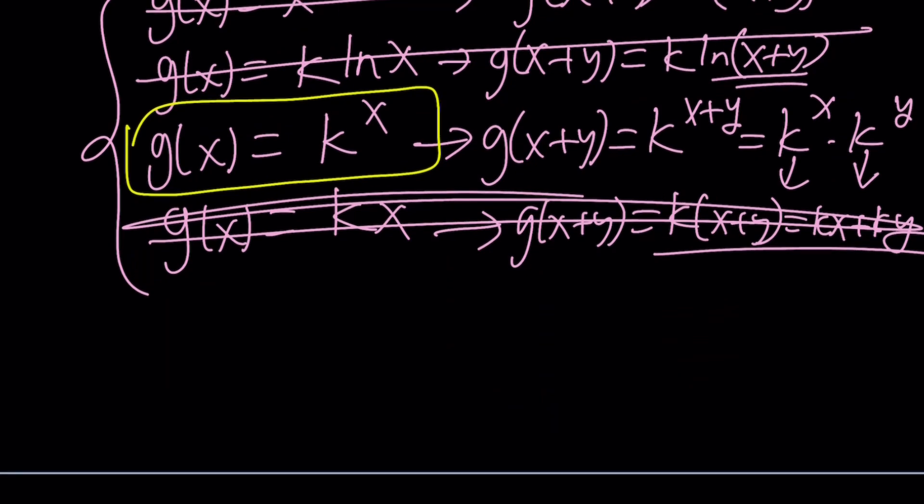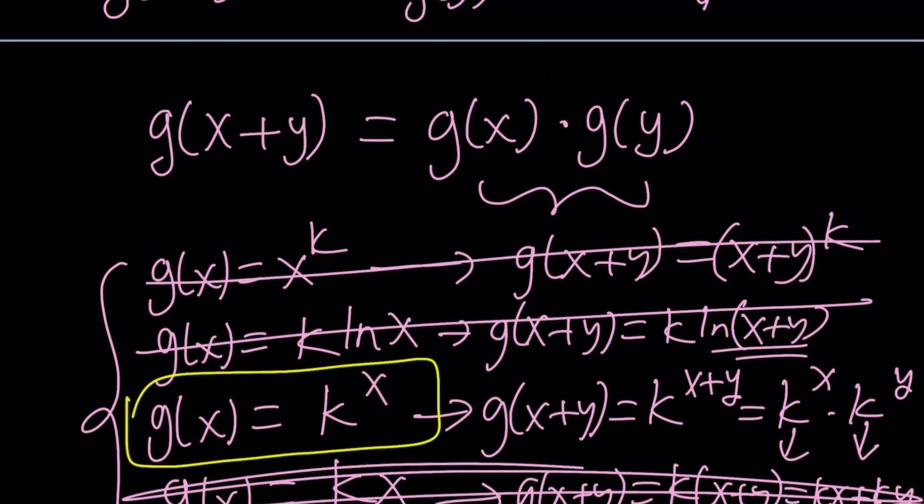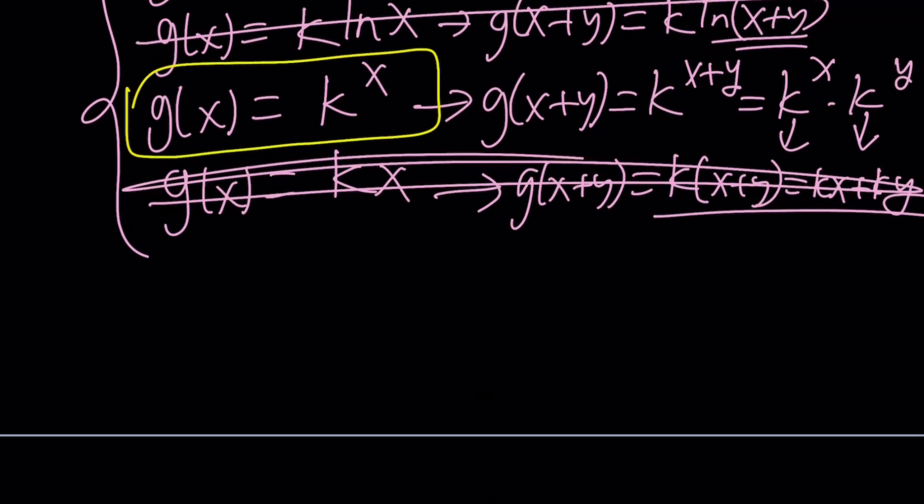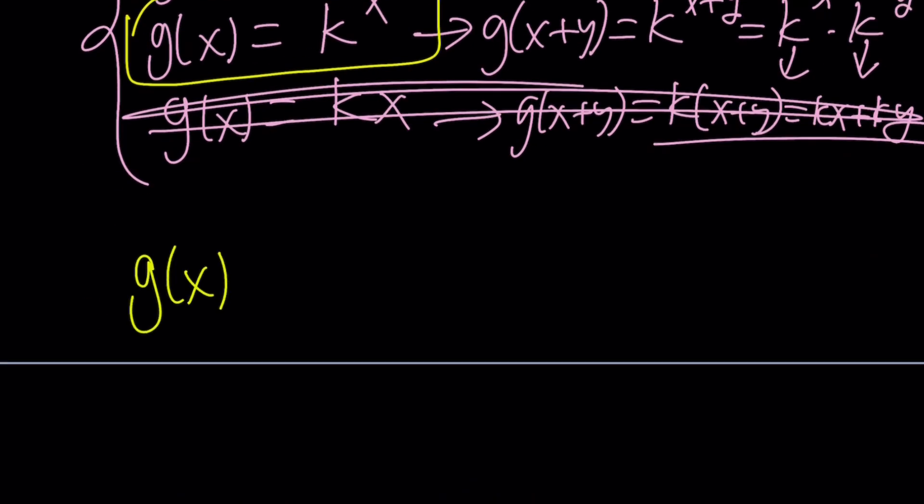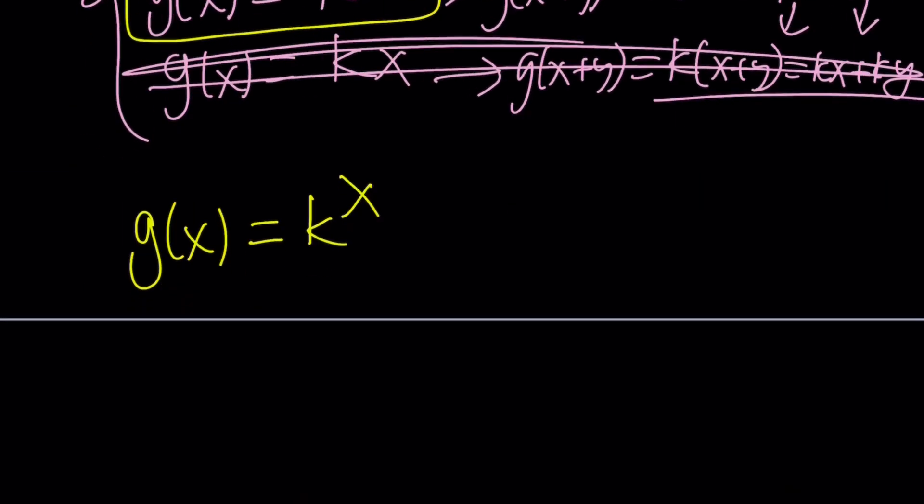Well, couldn't we call this e to the power x? Absolutely. You could do that as well. Now, let's go ahead and plug it in. So g of x is k to the x. But what is g of x? g of x is ln f of x. Awesome. So now, from here, we're going to solve for f of x by doing e to the power both sides.